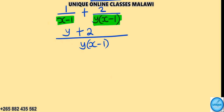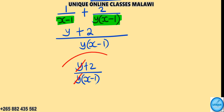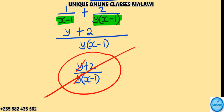So we get y plus 2 in the numerator, over y times the bracket x minus 1. Don't bother to cancel this y and that y — no, this is totally wrong.